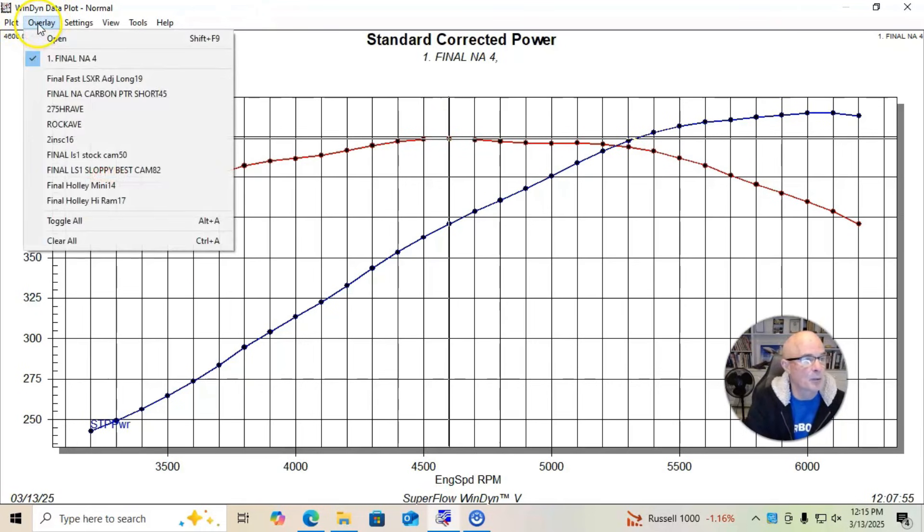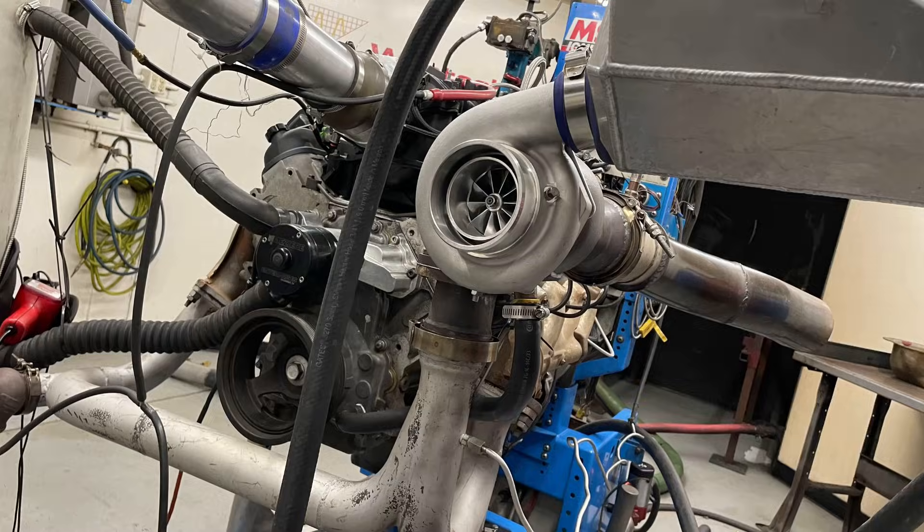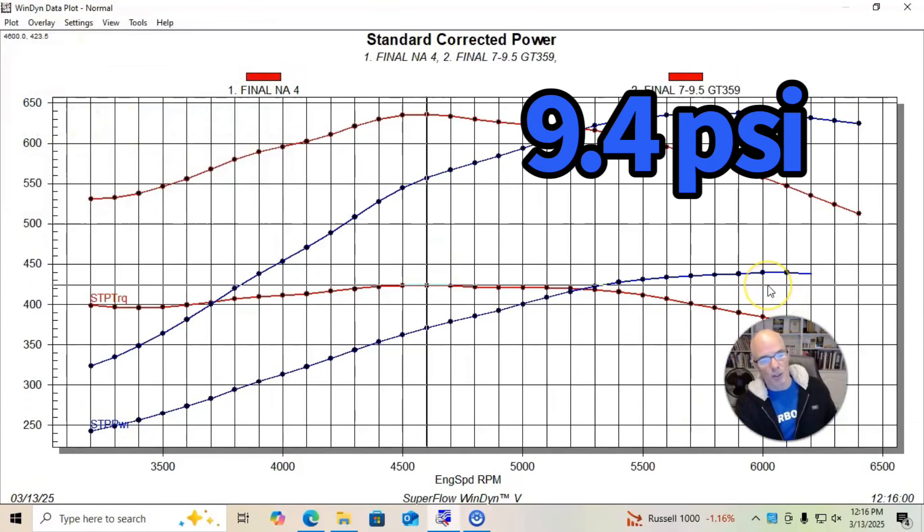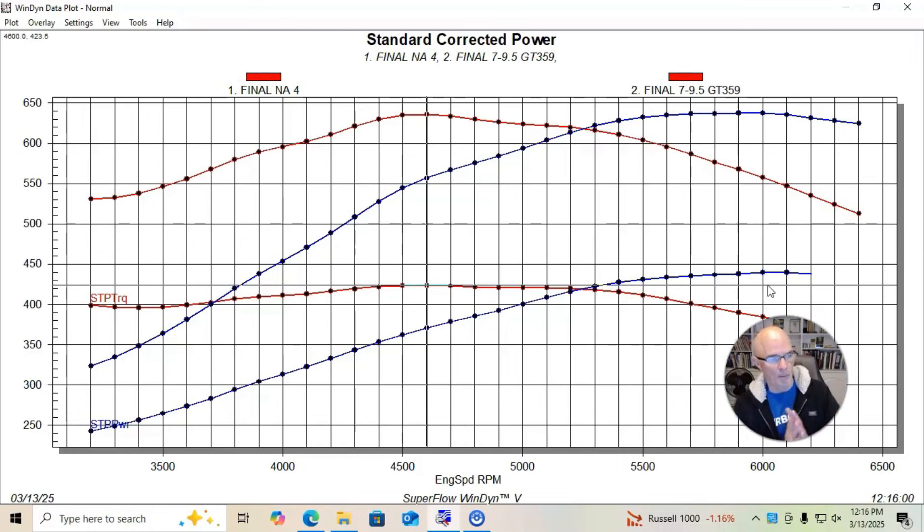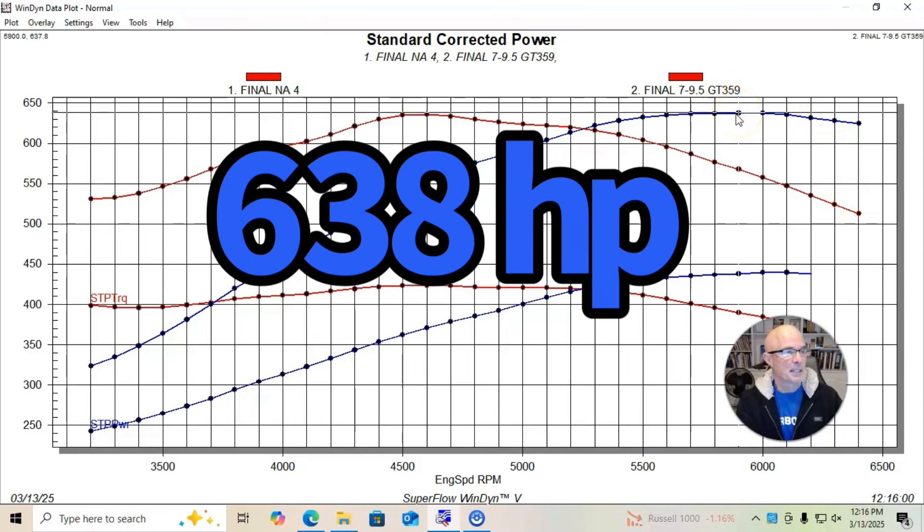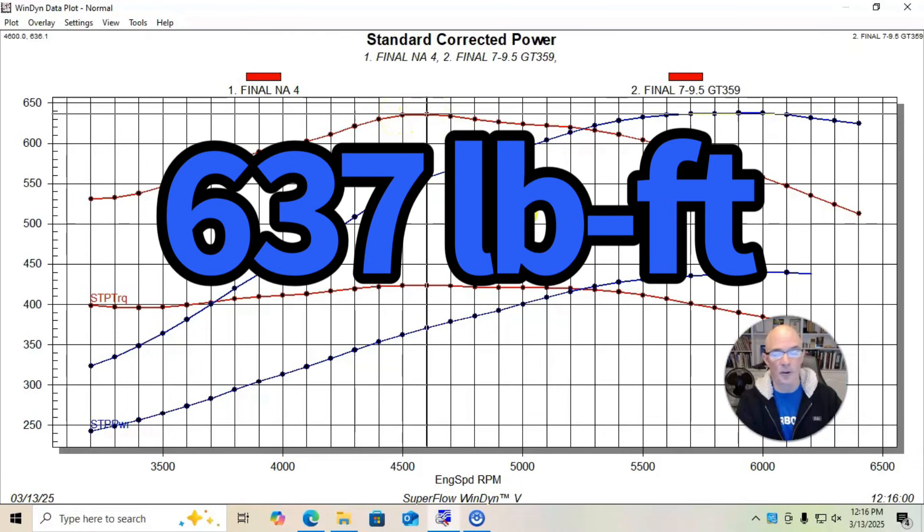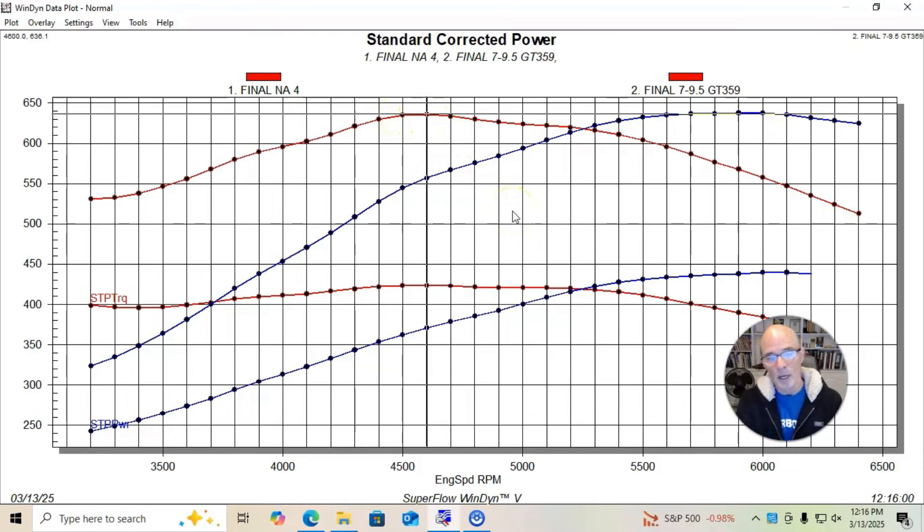Here's what happened after we added our single turbo setup. So this is a low boost version. Actually, the boost rose from about seven and a half pounds up to nine at the peak. And you could see it made a ton of power. Not surprising. 638 horsepower and 636 foot pounds of torque. So did very well. We're going to go up in boost quite a bit. We'll take a look at the results of all of that.